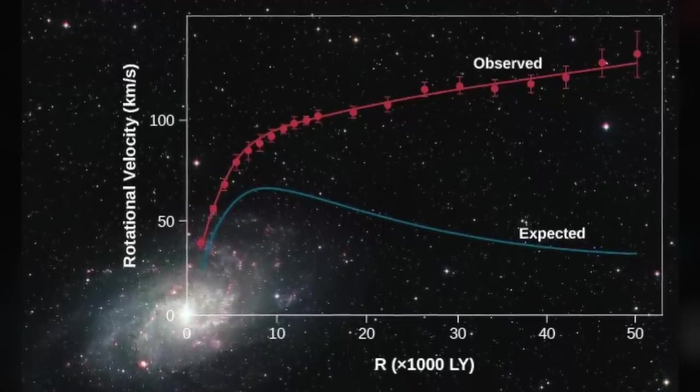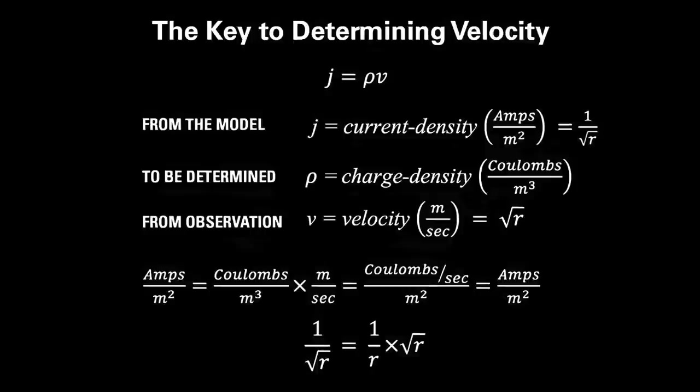We obviously know from historical astronomical observations what the typical velocity profile of stars within the galaxy looks like - it's approximately the square root of r. And we know from the equations of my model that the current density j varies with radial distance r out from the BC's central axis as one over the square root of r.